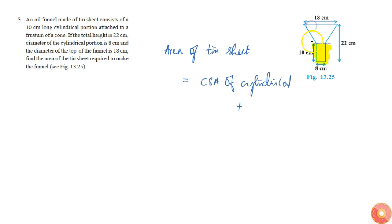From here till here it's a frustum. The curved surface area of the cylinder will be simply 2πr into height, which is 2πr(10). The curved surface area of the frustum will be equal to π(r1 + r2) times the slant height.